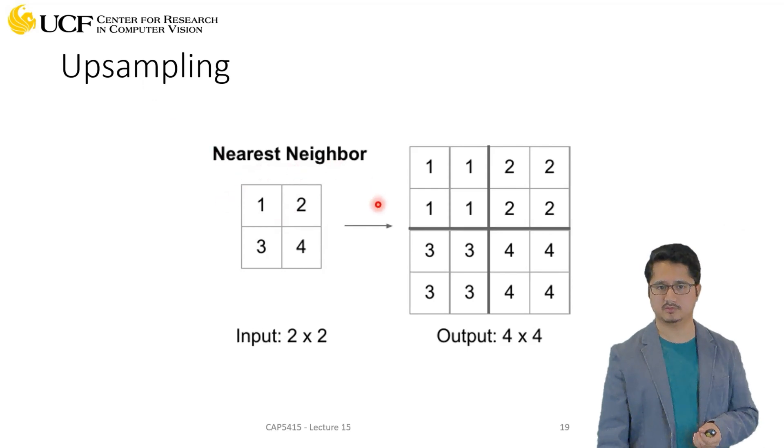This is just one way to upsample, which is nearest neighbor. Let's say this is your feature map 2x2 and you have to upsample by twice, so let's say 2x. This is going to be 4x4. You can just use nearest neighbor and repeat this value 1, repeat this value 2, 3, and 4. That's your 4x4 activation map.